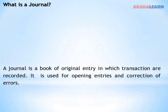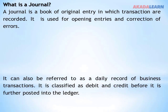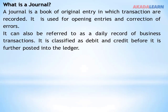What is a journal? A journal is a book of original entry in which transactions are recorded. It is used for opening of entries and correction of errors. It can also be referred to as a daily record of business transactions. It is classified as debit and credit before it is further posted into the ledger. Source documents are used to prepare a journal, and everything about a journal is the daily record of business transactions.